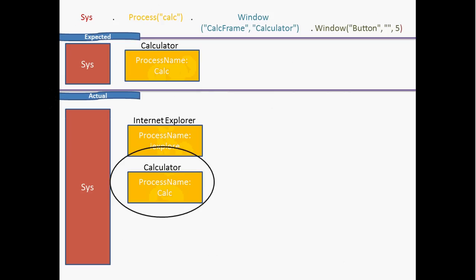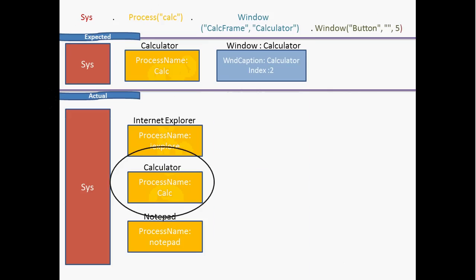Once it finds the expected process, TestComplete captures the process ID or process thread and stores it to traverse into the children of that process. For other processes like Notepad, it will not go further, as it already found what is expected. Within the matched process, there are two calculators open.